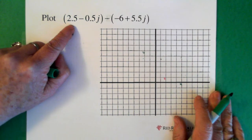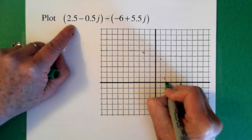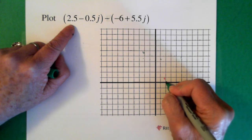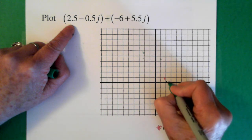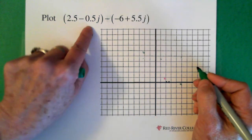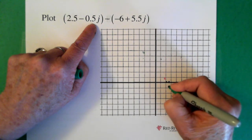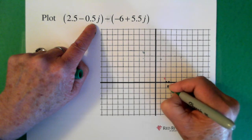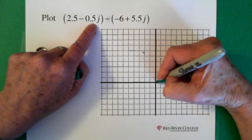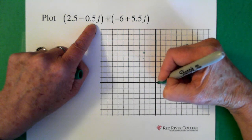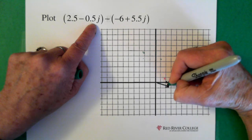Last question. So we're going to add this. One, two — and then 2.5 minus 0.5j. That's right here, down half, so right at this point here, about halfway. So there's our first vector.